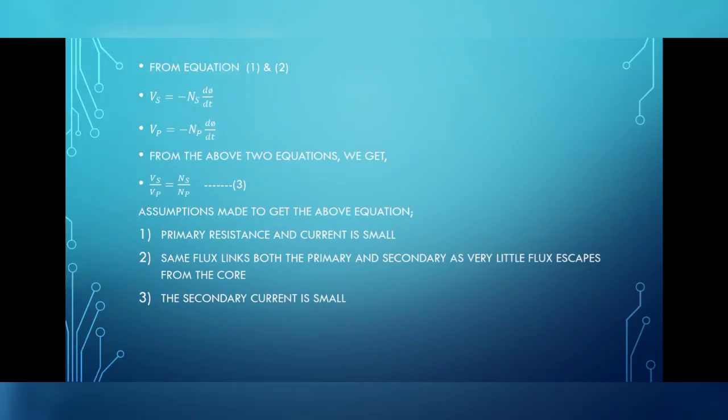From equation 1 and 2, VS equals minus NS dphi by dt and VP equals minus NP dphi by dt. From the above two equations, we get VS by VP equals NS by NP. To get the above equation, we have made three assumptions. The first one is primary resistance and the current is small. The second assumption is same flux links both the primary and the secondary as very little flux escapes from the core. And the last one is the secondary current is small.